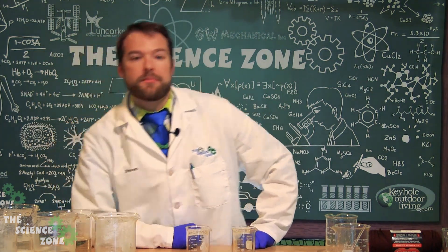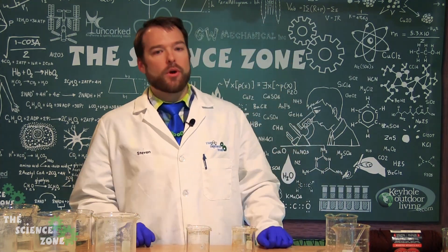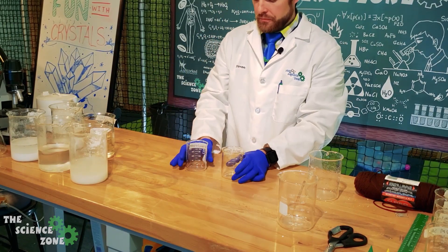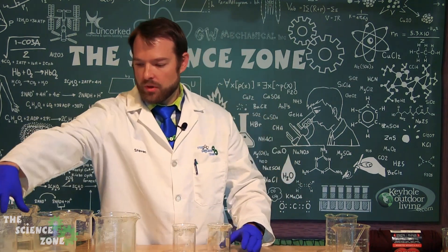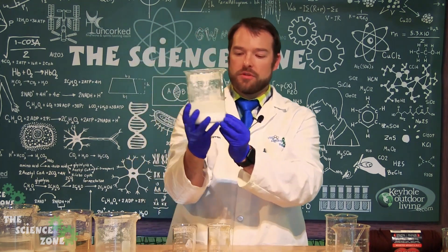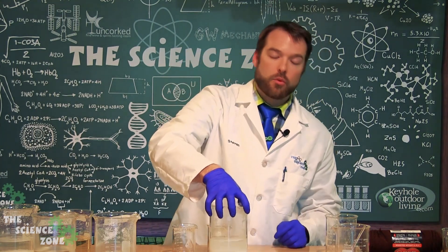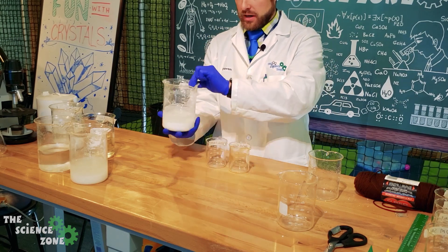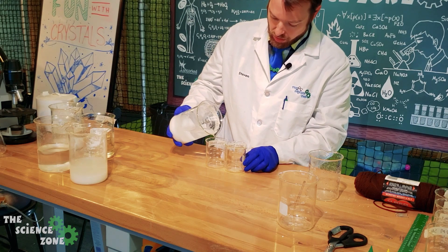All right, we've let our supersaturated solutions cool down. Now we're going to divide our liquids into their respective containers. So we've got containers labeled here for baking soda, grab our baking soda beaker, and you can see, maybe you can, hopefully you can, there is a bunch of baking soda on the bottom and we're going to leave that there. So we're going to pour the baking soda water, excuse me, directly into our beakers.